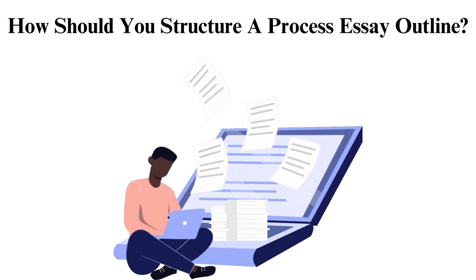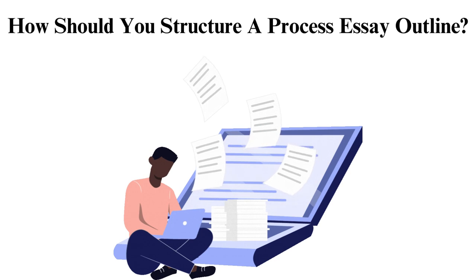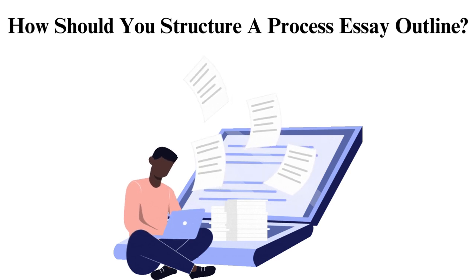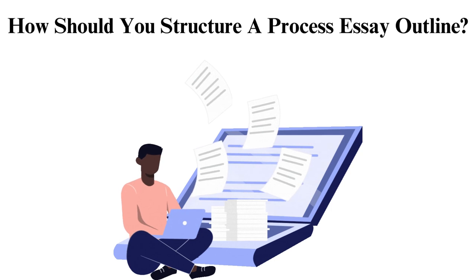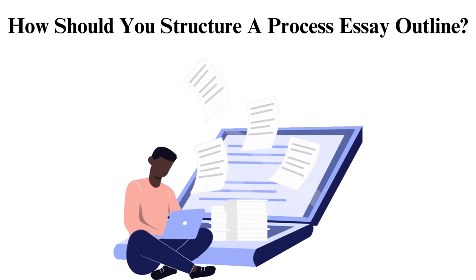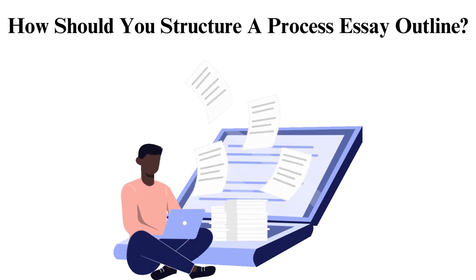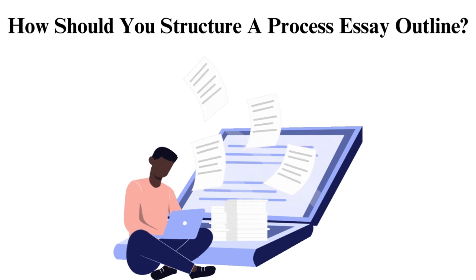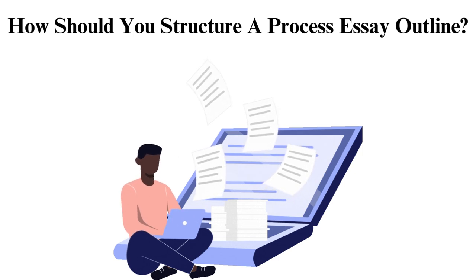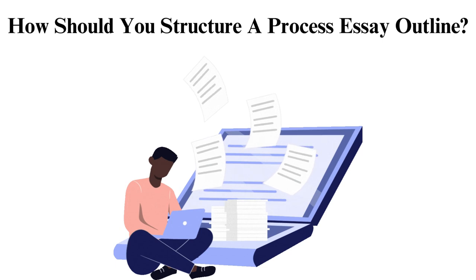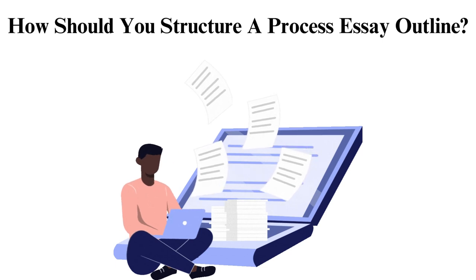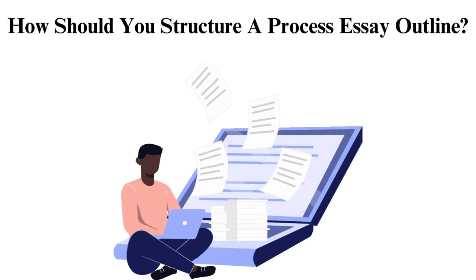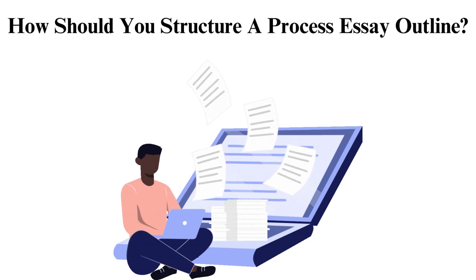How do you write body paragraphs for a process essay? All the action of the essay happens in the body paragraphs. Each paragraph should discuss a single subtopic, such as one step. You should also start every paragraph with a topic sentence, then an explanation — after mentioning the subtopic, explain more about it — followed by supporting evidence to support your claims.